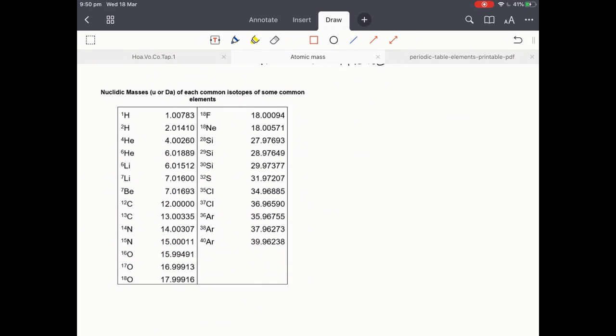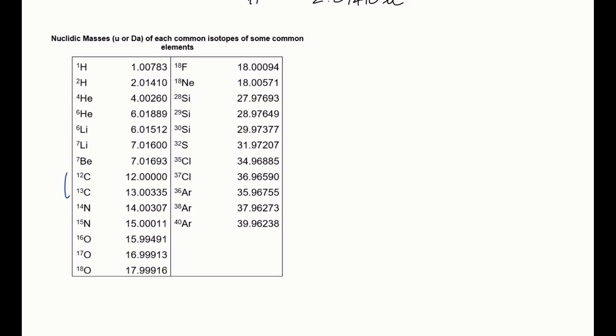The table being shown on the left here is the nuclidic masses of each of the common isotopes of the common elements. If you look at the carbons on the left, you see carbon-12 weighs exactly 12U or 12 Dalton, because that's just how atomic mass was defined in the first place. Each U is a 12th of the mass of carbon, therefore carbon will be 12 times that, which is 12U.